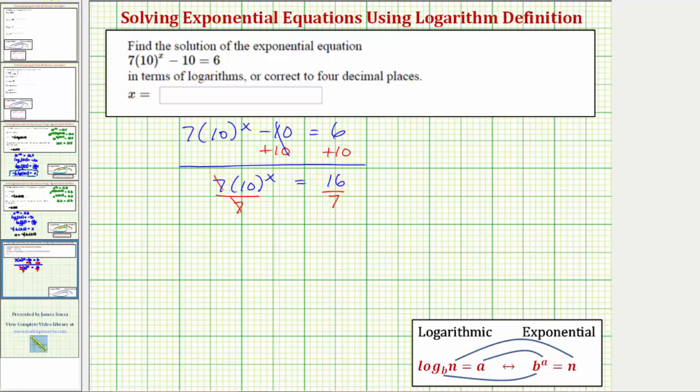So simplifying, we now have 10 raised to the power of x equals 16 sevenths. And now to solve for x, we can take the common log of both sides of the equation because we have base 10 here,